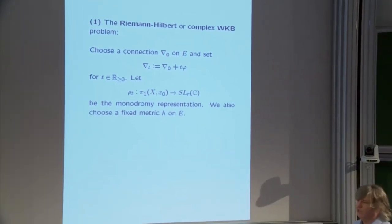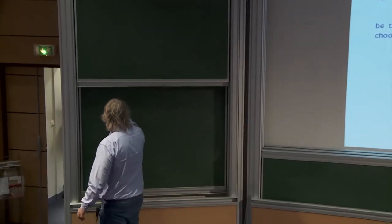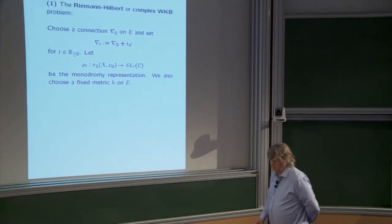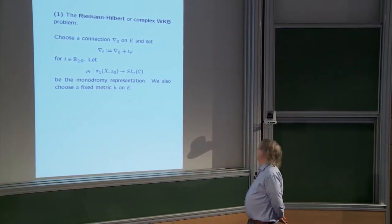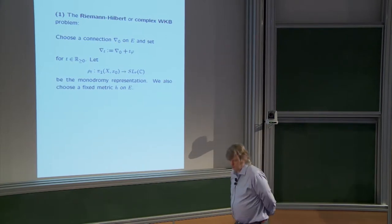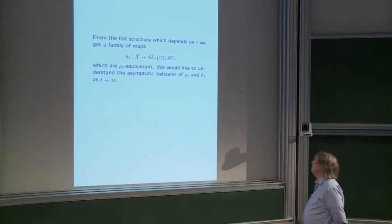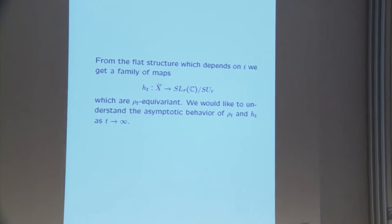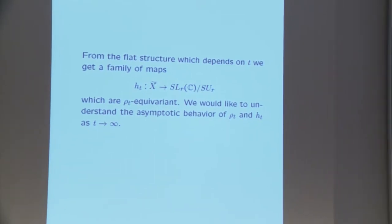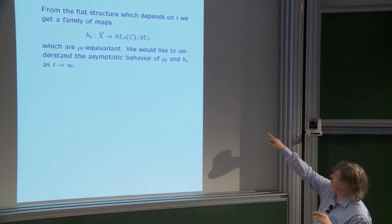The first is the Riemann-Hilbert or complex WKB problem. Take a base connection nabla_0 on E and look at a connection nabla_t = nabla_0 + t times the Higgs field phi, where t is a large parameter — essentially t = 1/ℏ. We get a monodromy representation for the connection. Choosing a fixed metric on the bundle E, we get a flat structure depending on t, and X̃ is the universal cover of X.